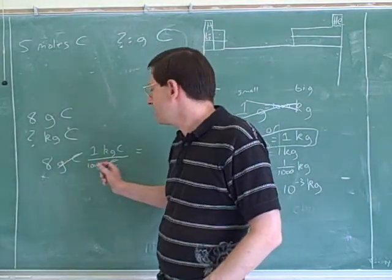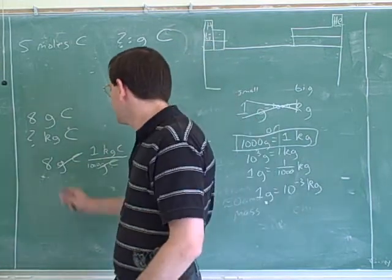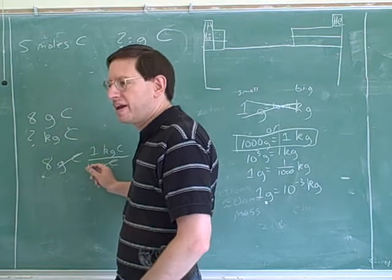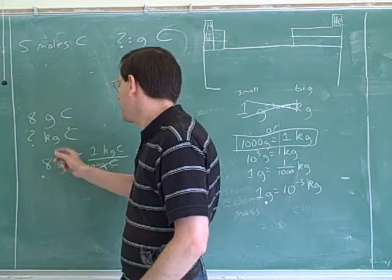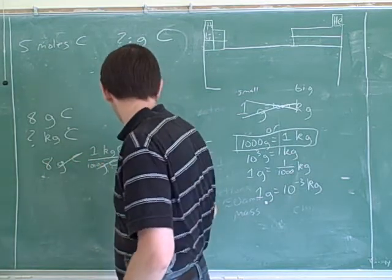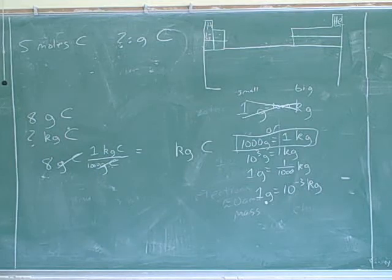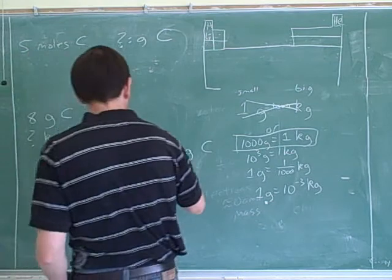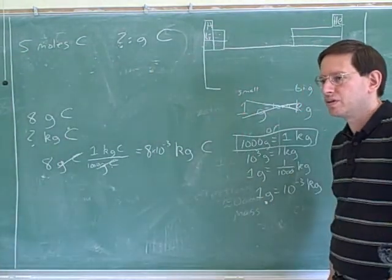And now in this case, we're done because we've canceled the units that we don't want and we're getting the units that we do want. So what does this mean? This means eight times one divided by one thousand. But you can pretty much ignore the one because that's not going to change anything. So it's eight divided by one thousand. So what should my answer be? Eight times ten to the power of minus three. Right. Eight times ten to negative three kilograms. Good.